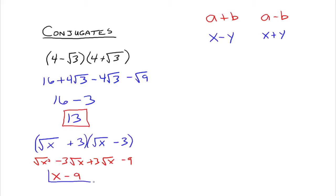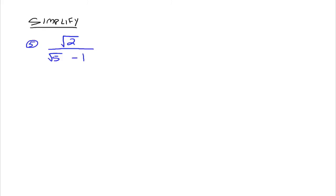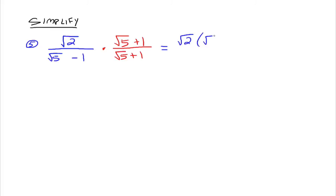We're going to use conjugates here to rationalize the denominator, but they're used for other things later on. Simplify: square root of 2 over the square root of 5 minus 1. We cannot just multiply the top and bottom by the square root of 5 to rationalize the denominator, because you would still have a square root in the denominator after distributing. Since you have a binomial in the denominator, the way to rationalize the denominator is to multiply by the conjugate of the denominator. So the conjugate of the denominator is the square root of 5 plus 1, and we multiply both top and bottom by that.